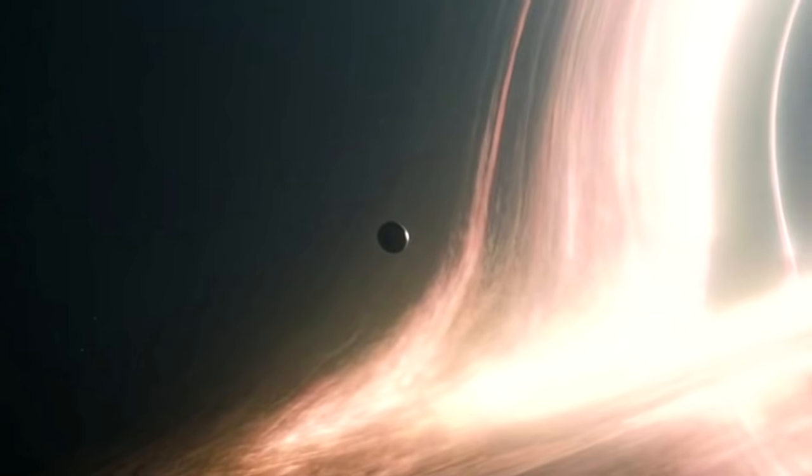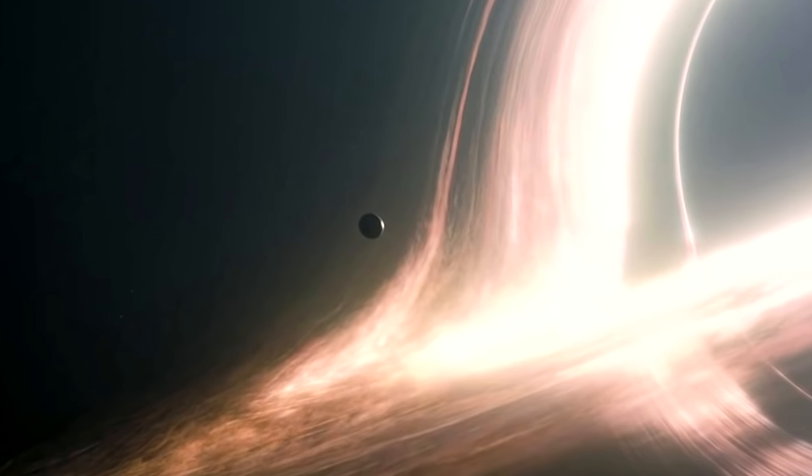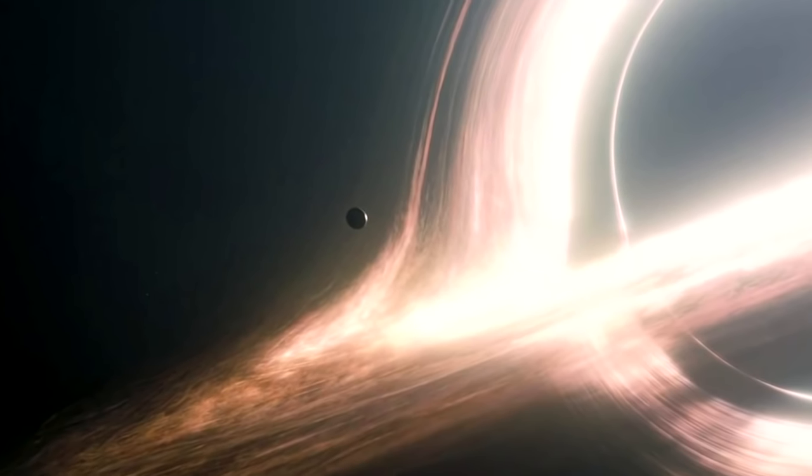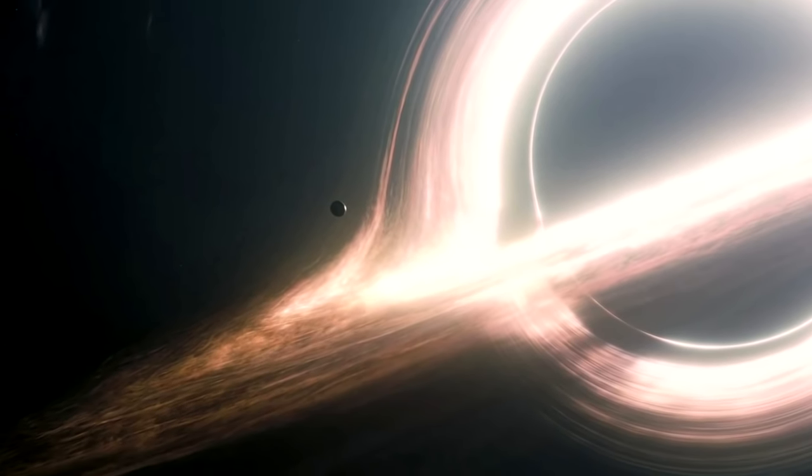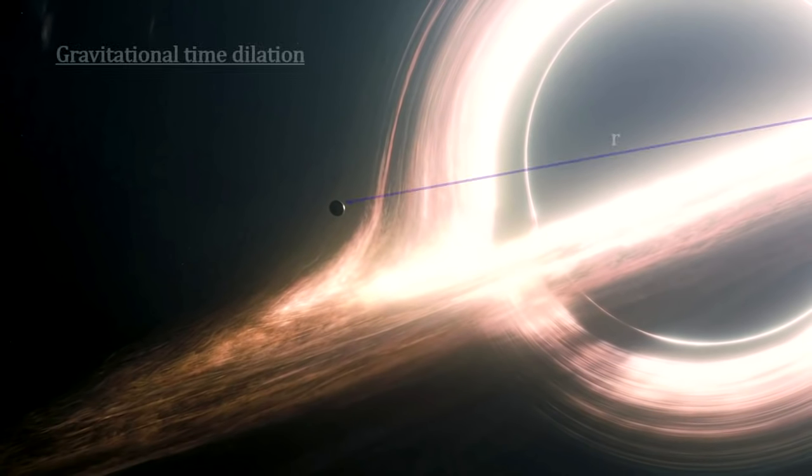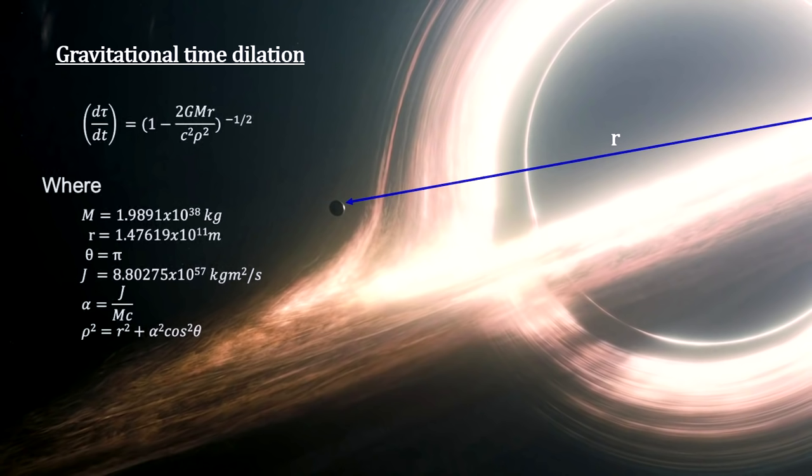In the movie, one hour on Miller's planet equals seven years on Earth. Some of this came from time dilation due to the planet's speed. It's traveling at 55% of the speed of light in order to maintain its orbit. But the bulk of the time comes from gravitational time dilation and the fact that Gargantua's rotational energy is so large. This intensifies time dilation considerably.